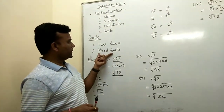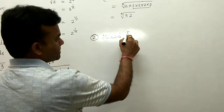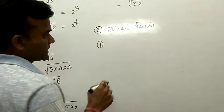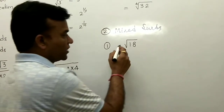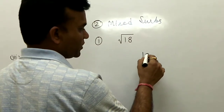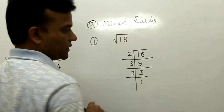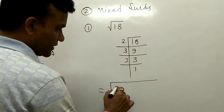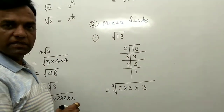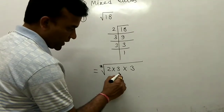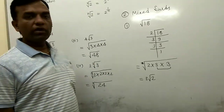Now the second phase is converting a pure surd into a mixed surd. Start with the example root 18. First, find the prime factors of 18: 18 = 2 × 9, 9 = 3 × 3, so 18 = 2 × 3 × 3. Write all factors inside. Since no root number is given, the power is 2, so look for pairs. The pair of 3s comes outside, and 2 remains inside. So root 18 converts to 3 root 2 as a mixed surd.